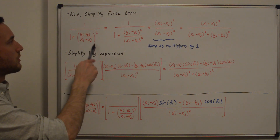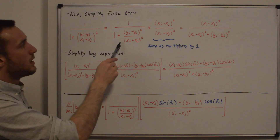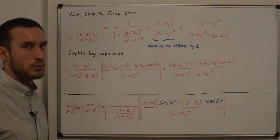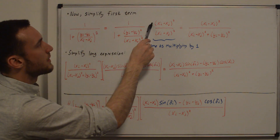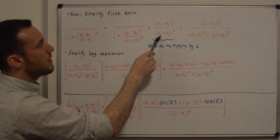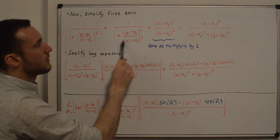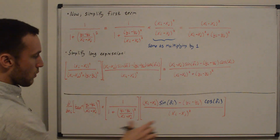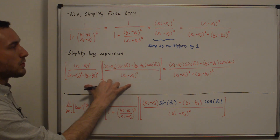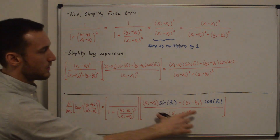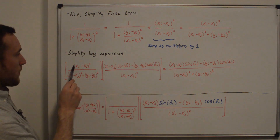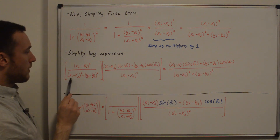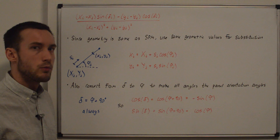Next we simplify the first term — the 1 over (1 + f²) part — by multiplying numerator and denominator by (xi minus xj)². This causes the (xi minus xj)² in the numerator to cancel with the denominator term, leaving (yi minus yj)². Plugging this in, we see that a term in the numerator cancels with the denominator, leaving the numerator as the combined expression over the denominator as the distance-squared sum.